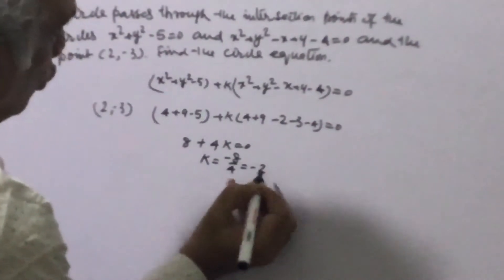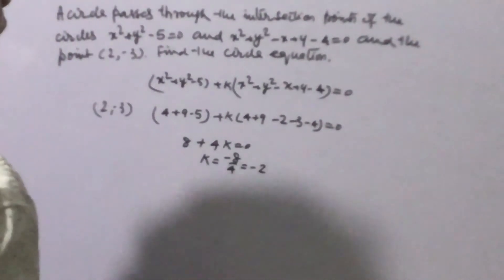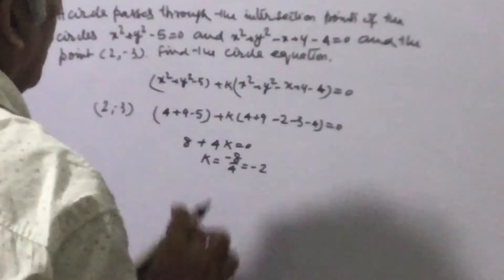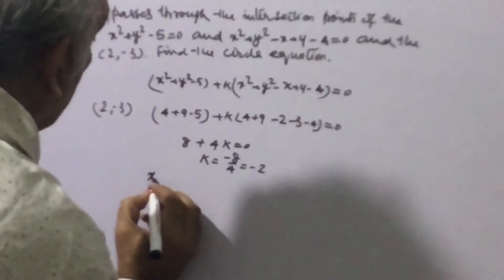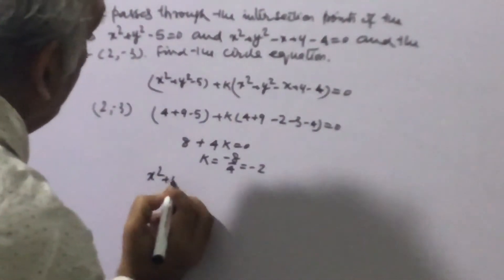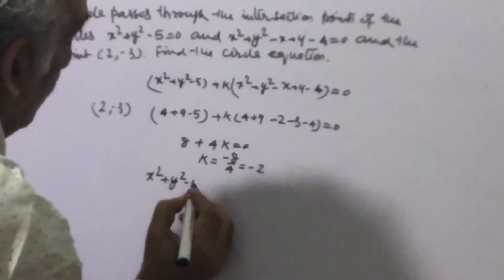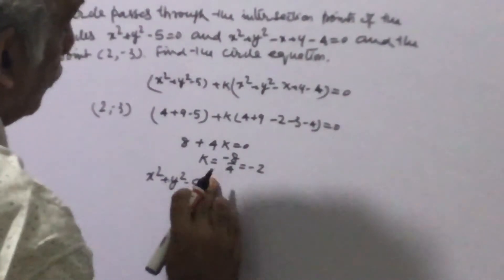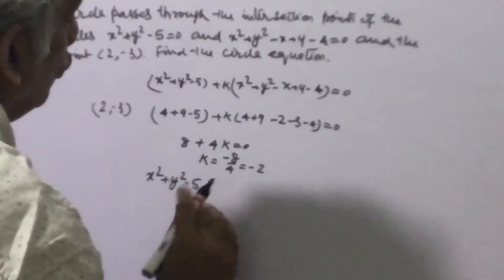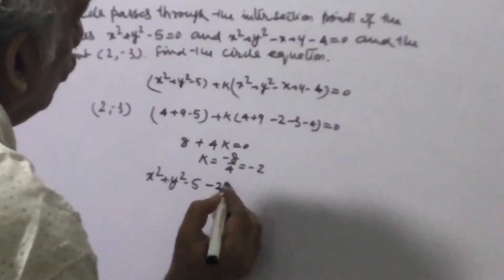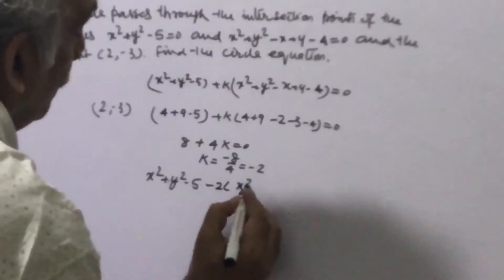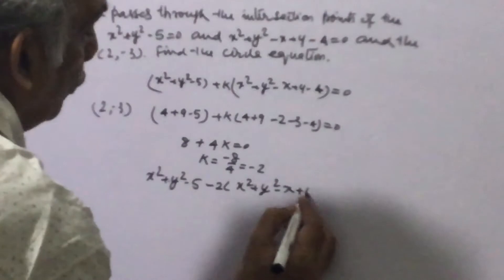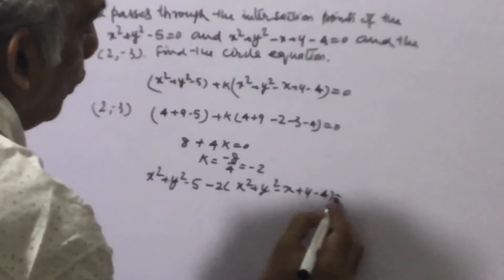Now we put k = -2 into the general equation: (x² + y² - 5) + (-2)(x² + y² - x + y - 4) = 0.